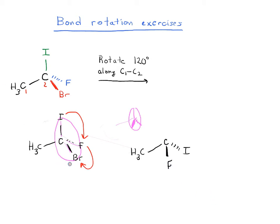Finally, the third part of the rotation is we're going to take the BR and we're going to put that where the I was, so the BR is going to be pointing straight up like that. And that is what our bond rotation should look like.